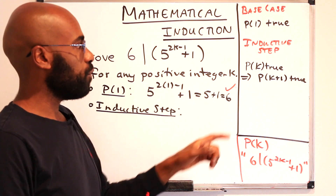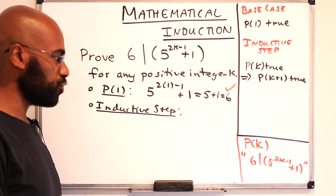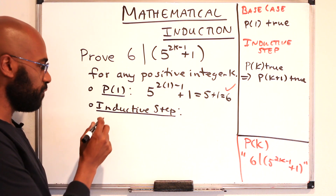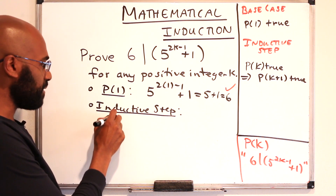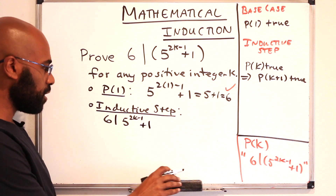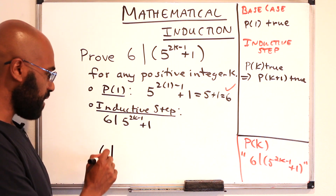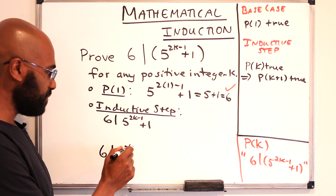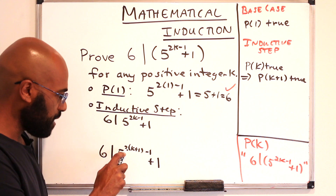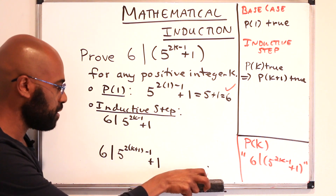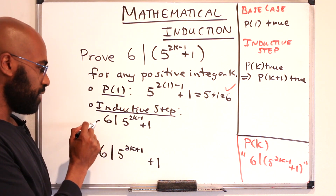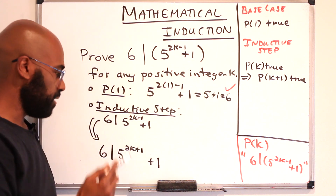Now in our inductive step, we want to prove that if p of k is true, then p of k plus 1 is true. We want to start off with the fact that 6 divides 5 to the 2k minus 1 plus 1 and somehow conclude that 6 divides 5 to the 2 times k plus 1 minus 1 plus 1. If we simplify this, we can rewrite this exponent as 2k plus 1. So we want to show if this is true, then this is true, and that would establish our inductive step.